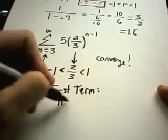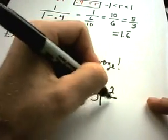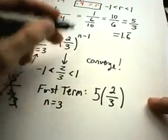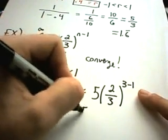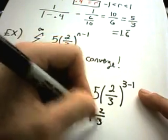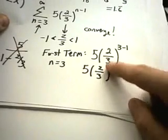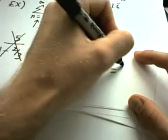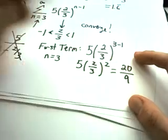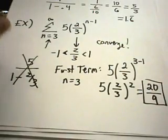So in this case, if I plug in n equals 3, I'm going to get 5 times 2 thirds raised to the 3 minus 1. Well, 3 minus 1, that's 2 thirds squared. 2 thirds squared, that's 4 ninths. So I'll get 5 times 4 ninths. I'll get 20 over 9. And this is now my first term of this series.